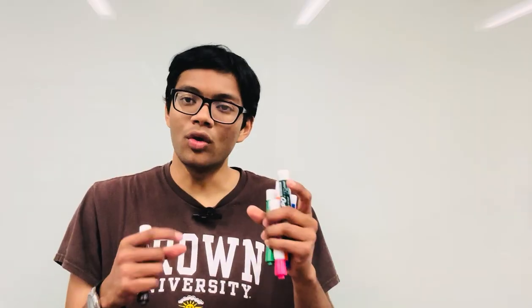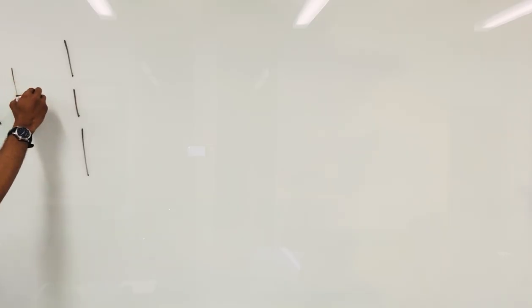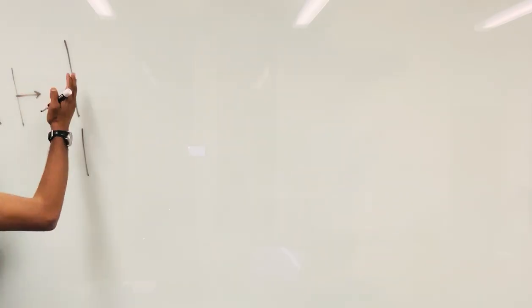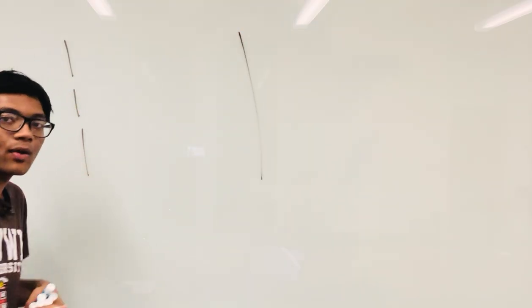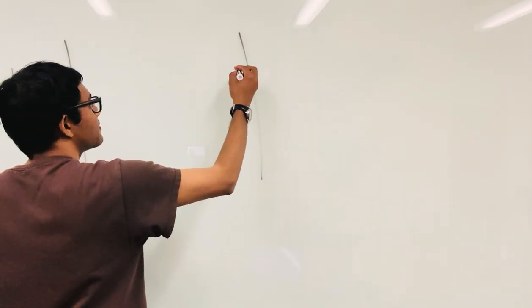The double slit experiment asks a simple question: what happens when you shoot light through two holes? So here's the experiment — we have two slits, and here is my incoming beam of light. This is what's called monochromatic light, light of a single color. It's not a rainbow, and it's not white light, which is made out of all the light colors combined. This is just a single color — red, blue, green, whatever.